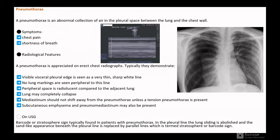The radiological features on chest x-ray: visible visceral pleural edge is seen as a very thin sharp white line, no lung markings are seen peripheral to this line, peripheral space is radiolucent compared to the adjacent lung, lungs may completely collapse, mediastinum should not shift away from the pneumothorax unless a tension pneumothorax is present, and subcutaneous emphysema and pneumomediastinum may also be present.